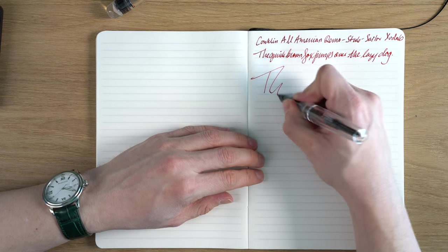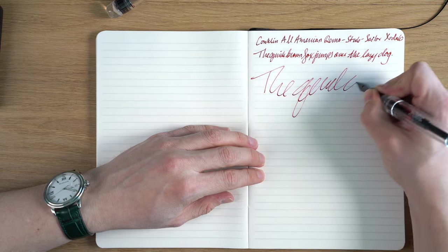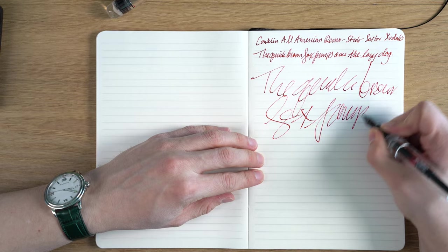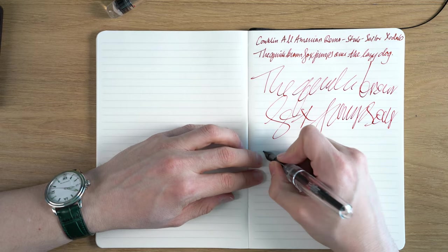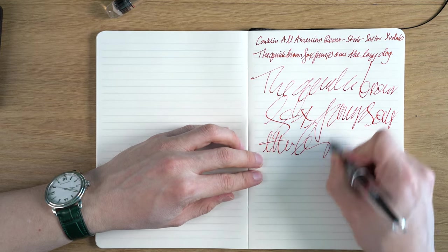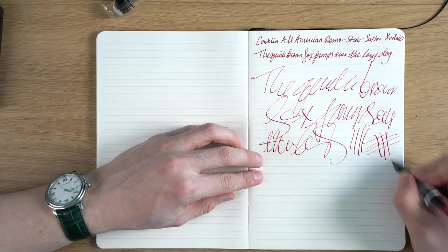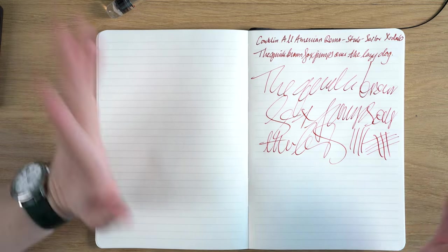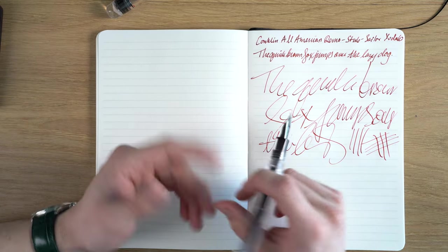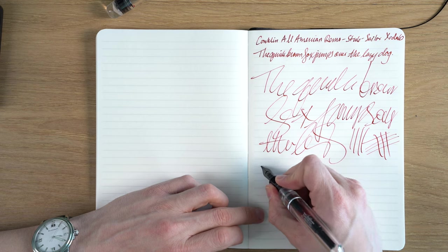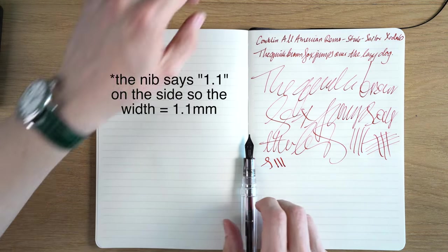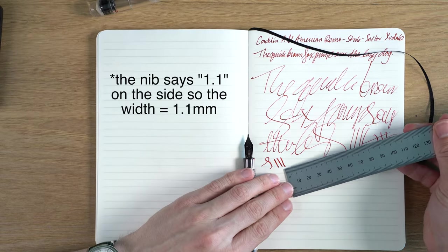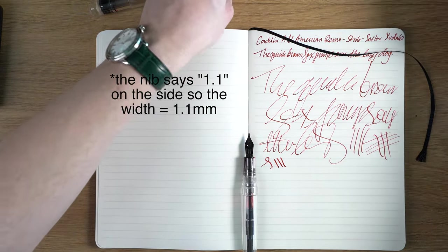Let's try fast writing. Yeah, that's flawless performance really. These Yovo nibs, these modern Yovo nibs are super good performers. I believe this is maybe a 1.1 millimeter stub. They don't say what the width is.